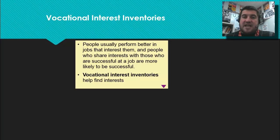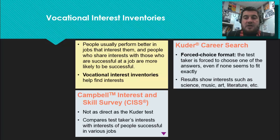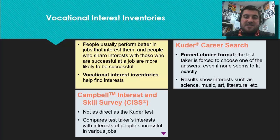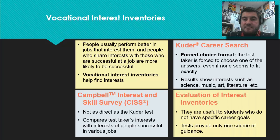Vocational interest inventories are interest tests. People perform better in jobs that interest them, and those who share interests with successful people in a field are more likely to succeed. The Kuder Career Search uses a forced-choice format measuring interests in areas like science, music, art, literature, and math. The Campbell Interest and Skills Survey compares your interests with those of people successful in various jobs — for example, if you share interests with Bill Gates, it might suggest computers. These are useful for students without a career goal, but can't definitively predict career success.